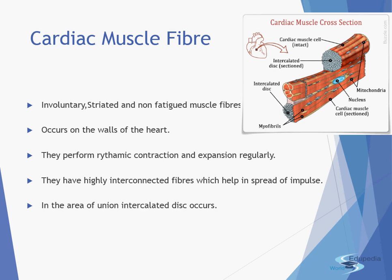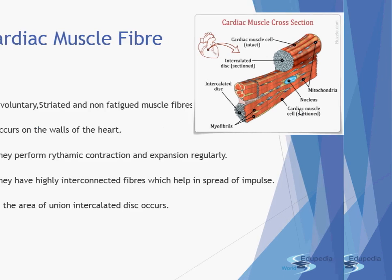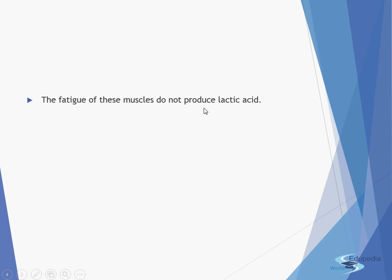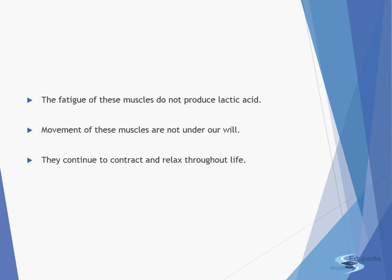In the area of union, intercalated discs are present. The fatigue of these muscles does not produce lactic acid — this is a very important point. Whenever muscles get fatigued due to anaerobic respiration they produce lactic acid, causing sore muscles. But cardiac muscle is the only muscle which does not get fatigued and therefore does not produce lactic acid. Even involuntary muscles work in breaks, but cardiac muscle works throughout the day, night, and throughout your entire lifespan without producing lactic acid. The movement of these muscles is not under our will — they continue to contract and relax throughout life.